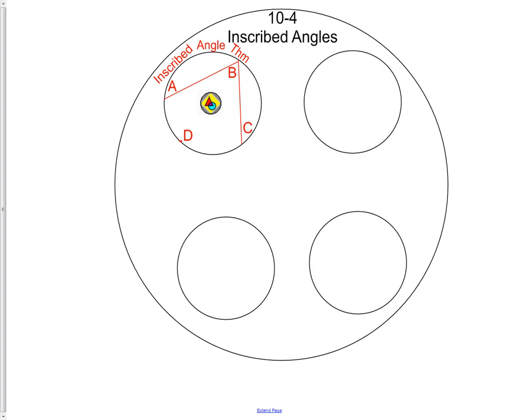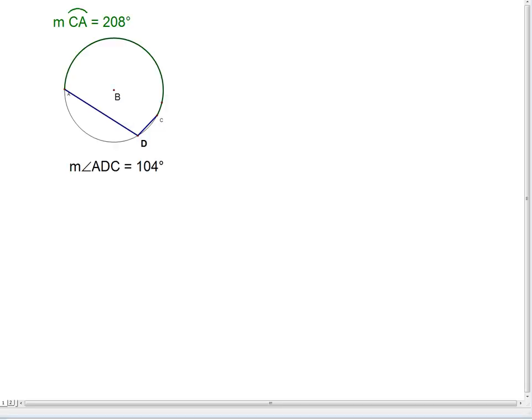Here's an example of an inscribed angle. Angle ADC is inscribed in the circle. We know that we have an arc that measures from C to A. It's a major arc and it measures 208 degrees. The inscribed angle would be one half of that. Therefore we now have a theorem or a formula to find the measure of an inscribed angle. The measure of an inscribed angle is one half of the arc which connects its endpoints.